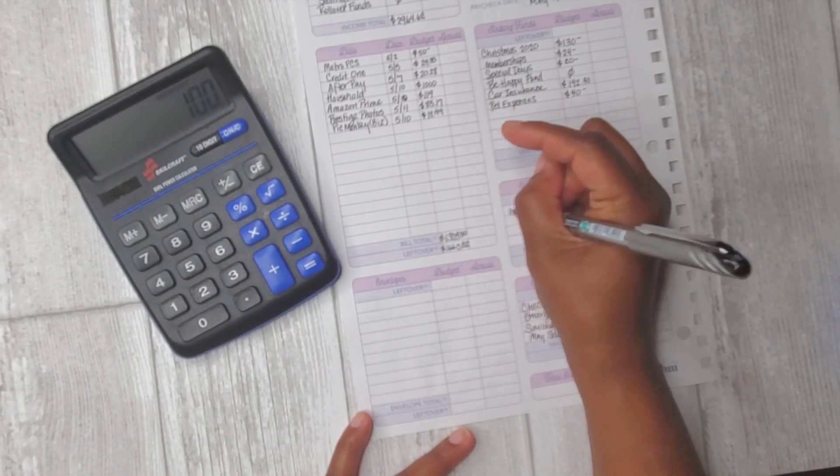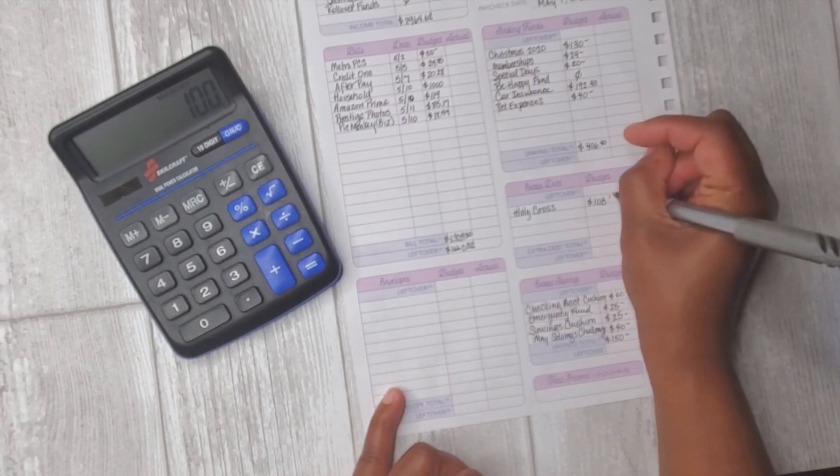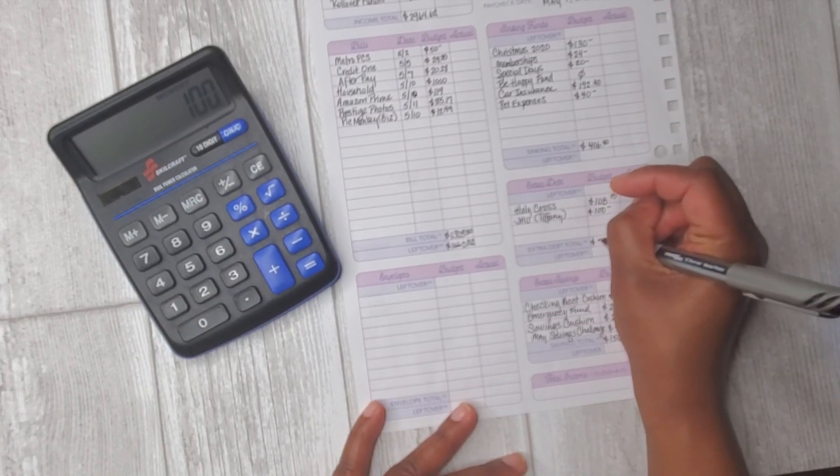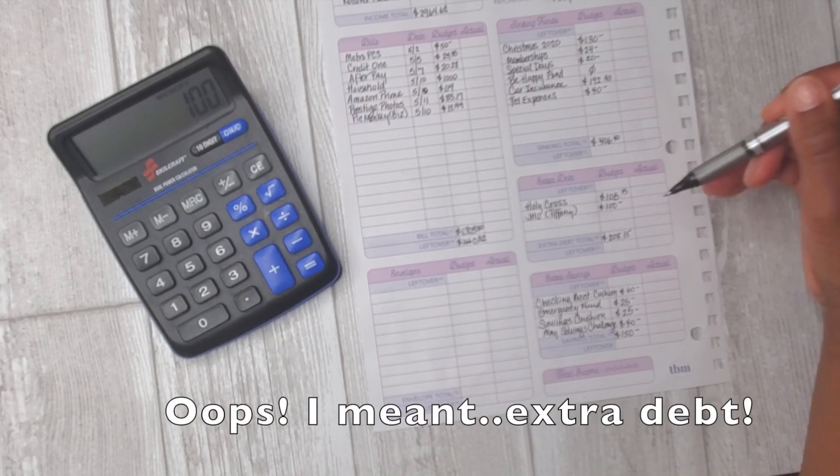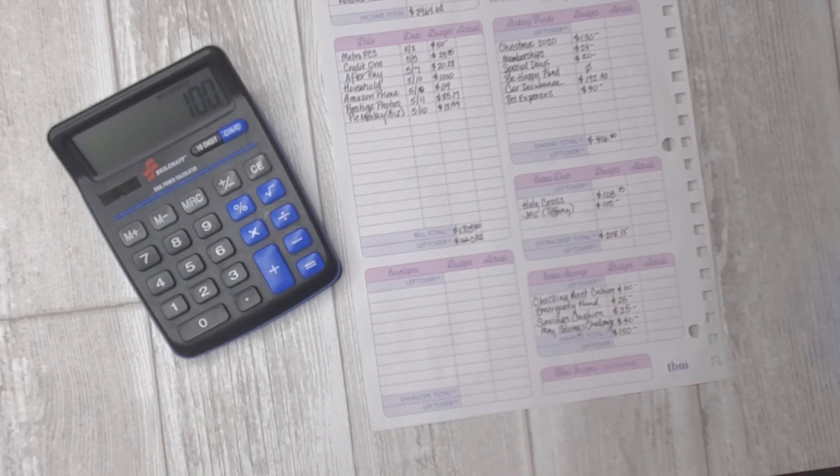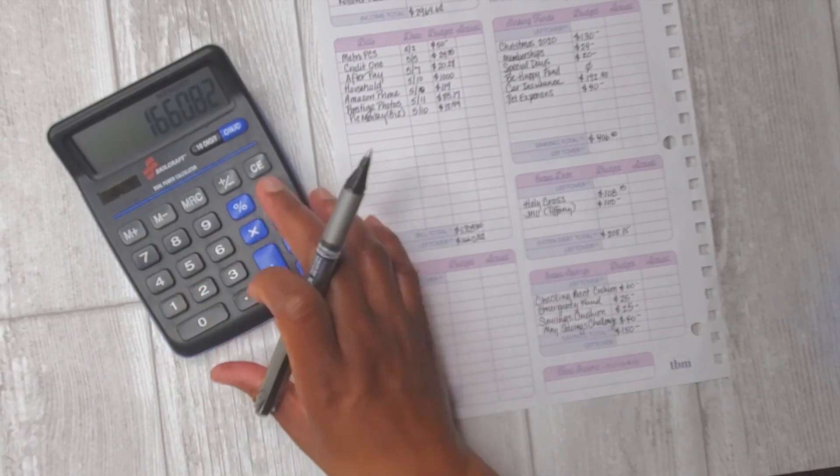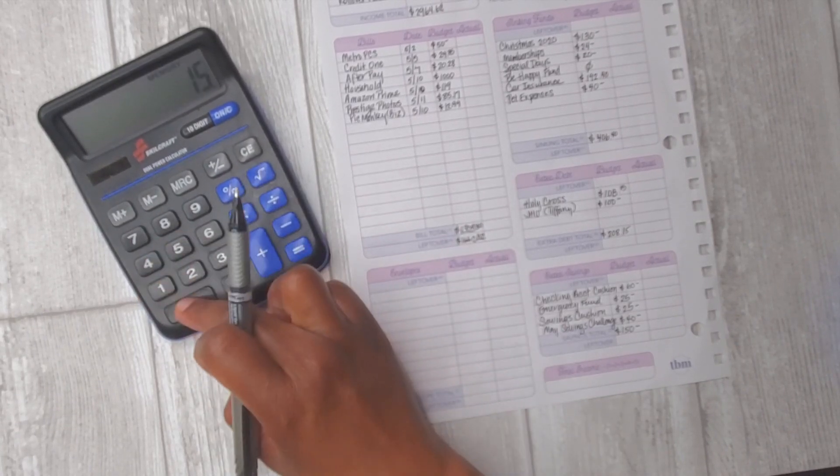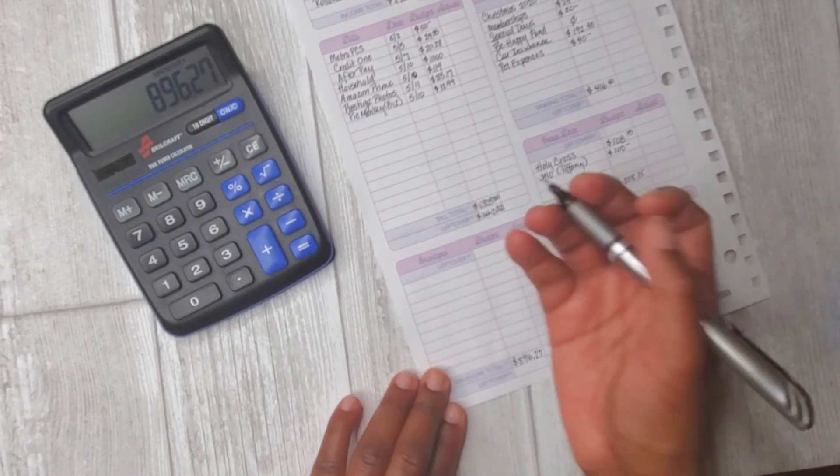Now for extra debt, I know I have two medical bills I want to pay. One is for $108.15 and I also have another medical bill I want to put $100 towards. That gives me a total of $208.15. Looking at what my sinking funds are, my extra budget and my extra savings expenses, let me see how much I will have left over for variable funds. I take my leftover funds after subtracting out my bills, which leaves me $1,660.82 minus $406.40 minus $208.15 minus $150. That leaves me with $896.27.